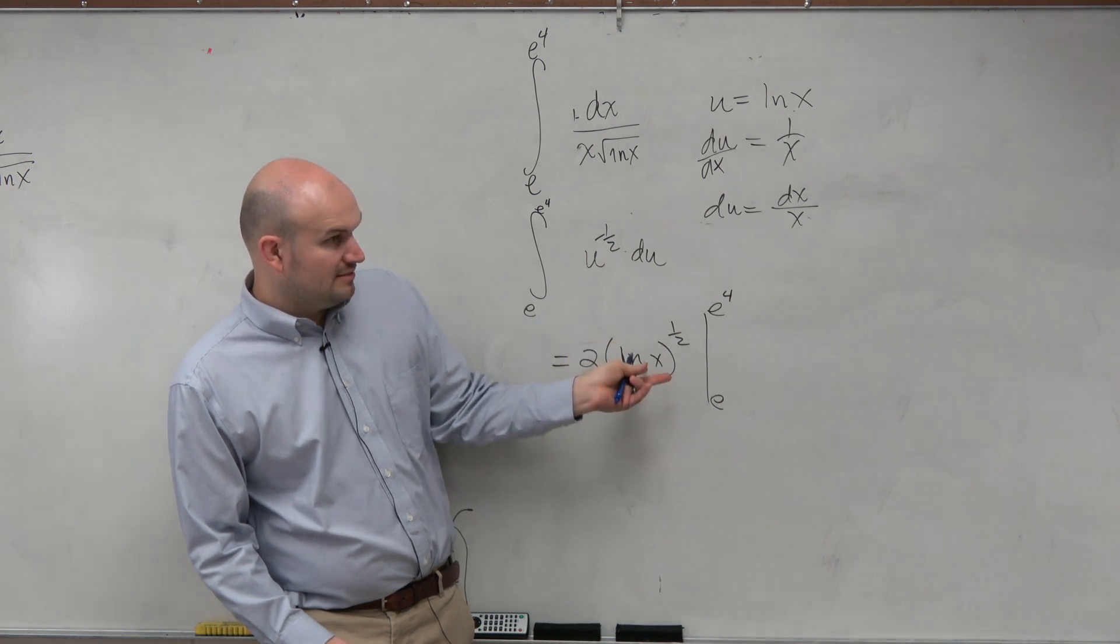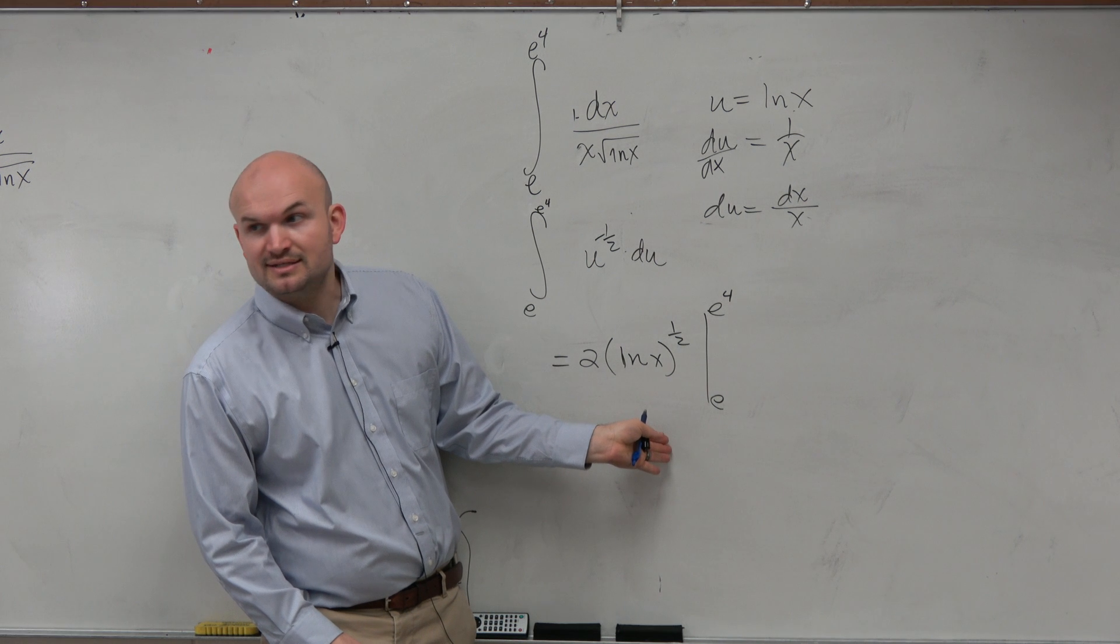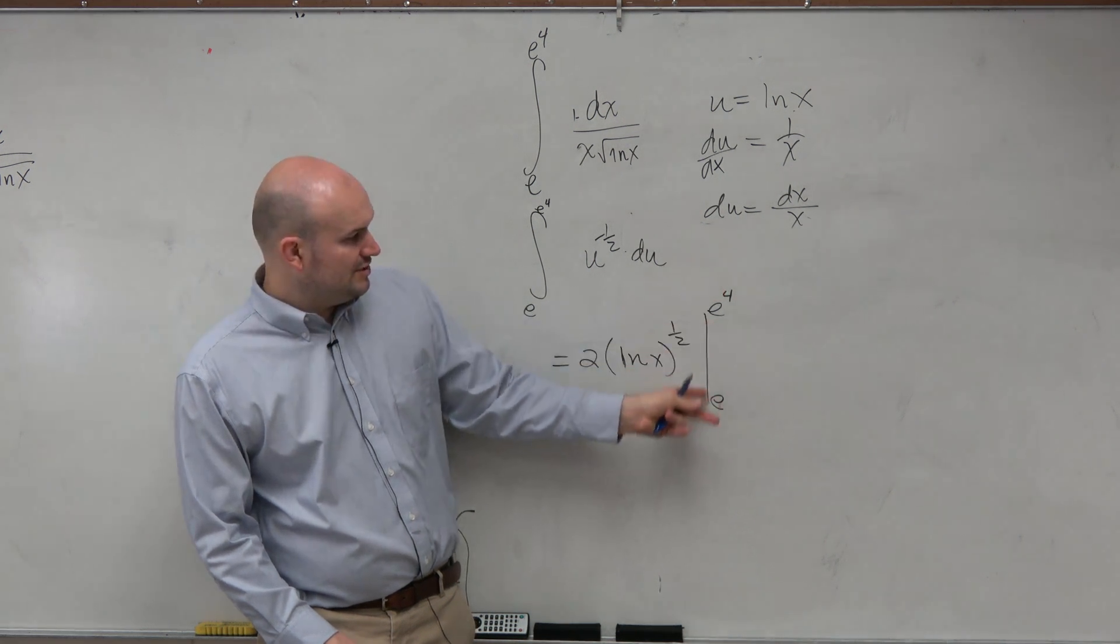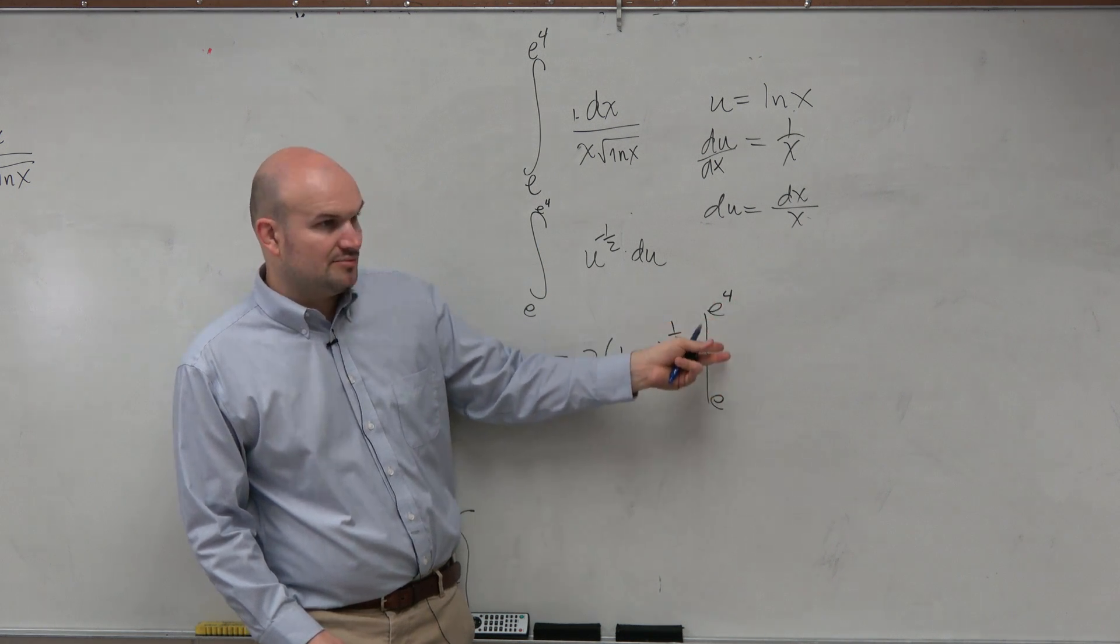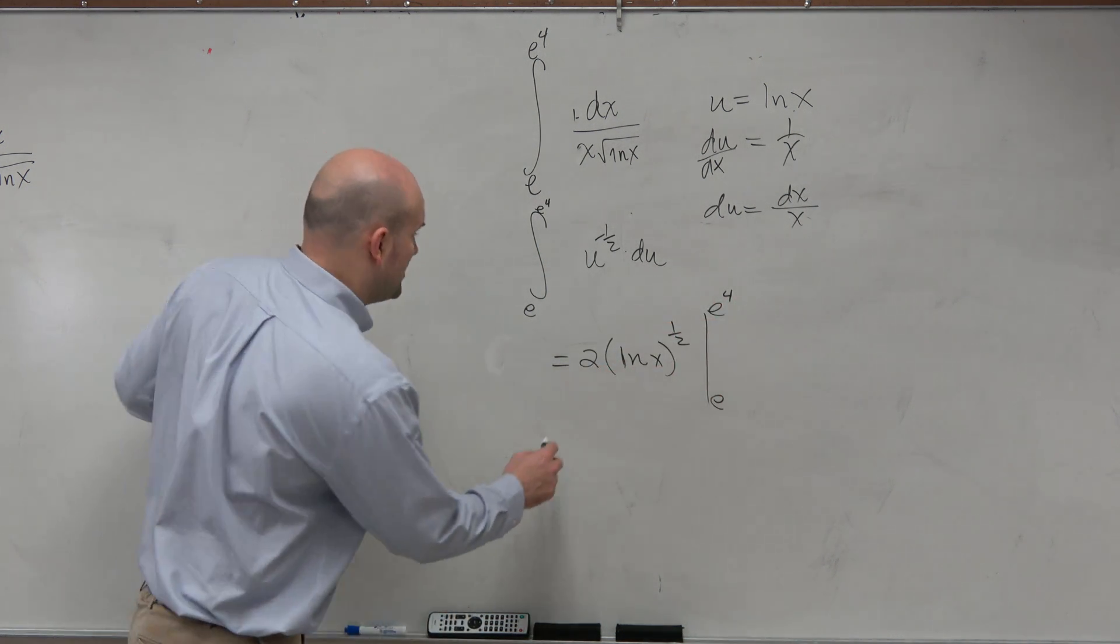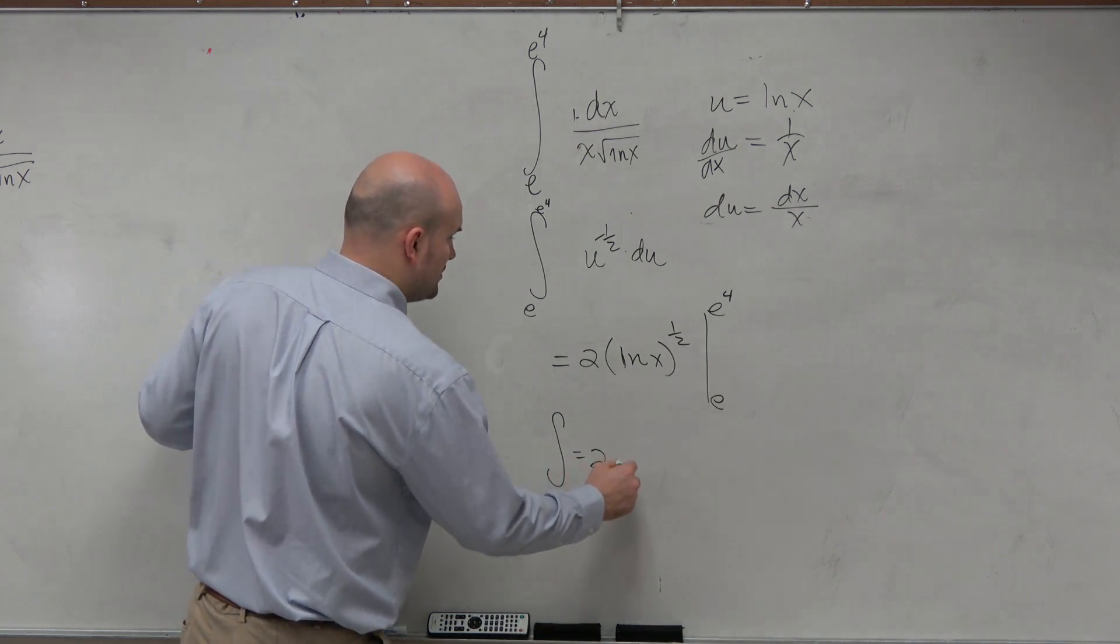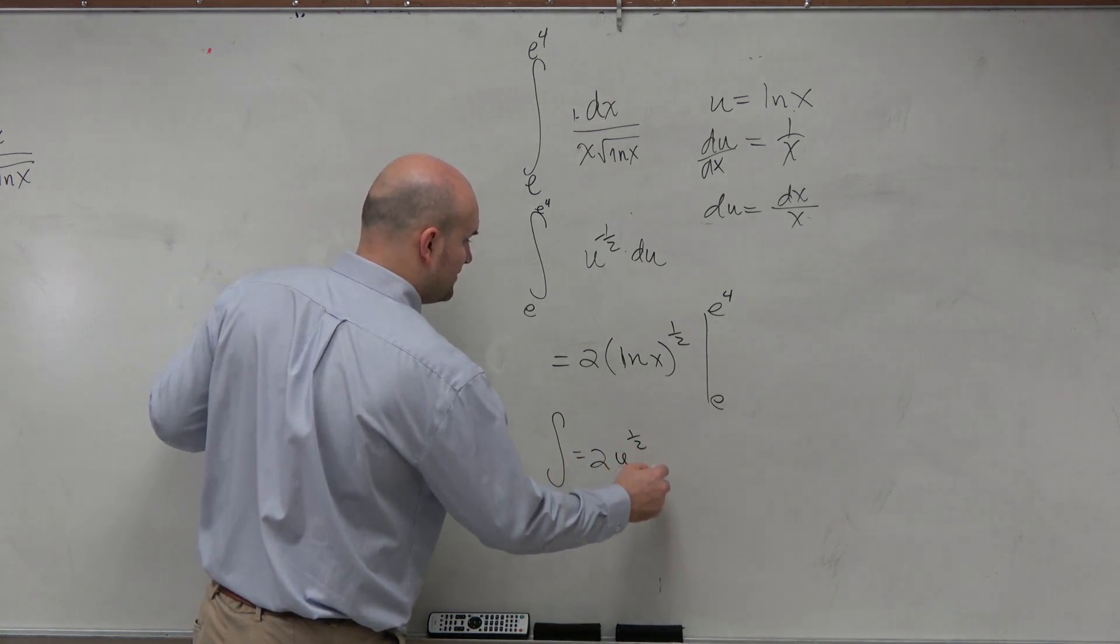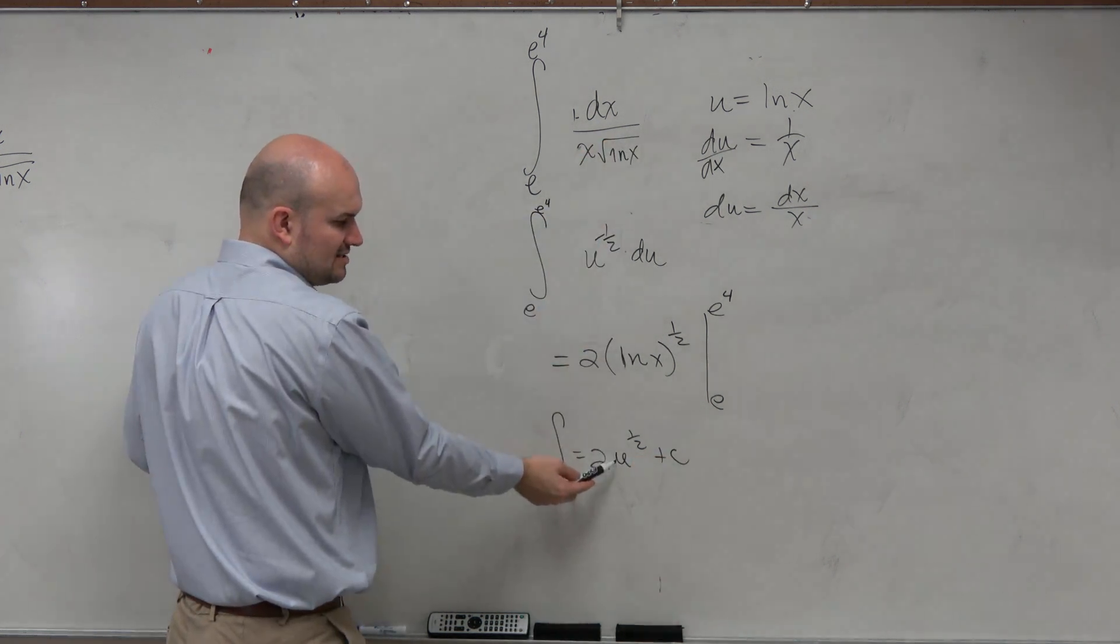Does everybody see what I did? I basically found the anti-derivative of this, replaced u back in. I'm not doing plus c, because this is a definite integral, not an indefinite. So now I'm just going to evaluate it from this part. If these numbers weren't up here, then I could just go ahead and do plus c. Or if those numbers weren't up there, it would just look like this.